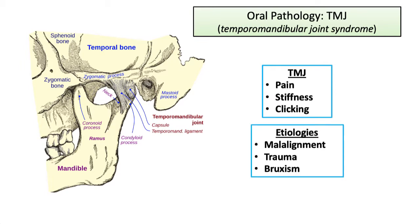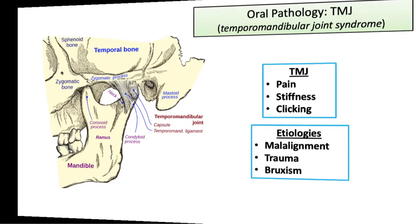TMJ can be caused by malalignment of the joint, trauma, or bruxism, which reflects muscular strain from clenching or grinding the teeth at night or during the day with stress. You should be familiar with this common clinical entity, but board questions on this entity will be few and far between.